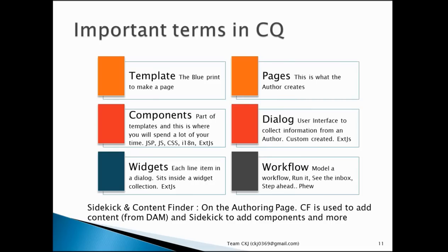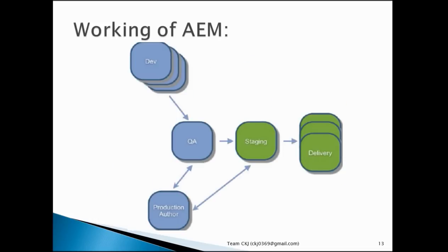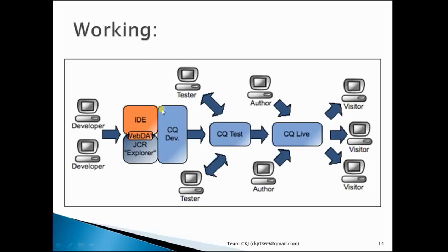There are important terms in CQ — please pause the screen and read about them in detail. Regarding the working of AEM: as shown earlier, the process goes from author to publish via activate or publish action. As developers, we do our code in CQ and then push it to CQA. From there it goes to staging, and then to delivery. You can pause the screen to have a look at this diagram in detail.